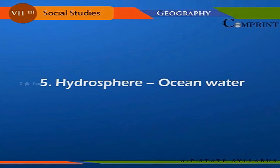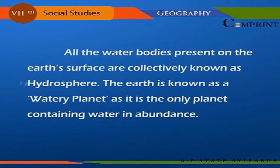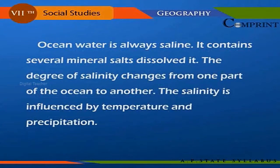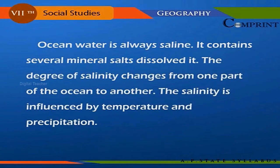All the water bodies present on the earth's surface are collectively known as the hydrosphere. The earth is known as a watery planet as it is the only planet containing water in abundance. Ocean water is always saline — it contains several mineral salts dissolved in it. The degree of salinity changes from one part of the ocean to another, and salinity is influenced by temperature and precipitation.